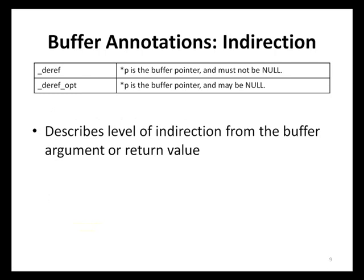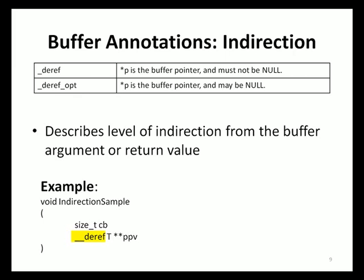The annotations found in the indirection category are used to describe the level of indirection of an argument or return value. If no annotation is specified, it is assumed that the argument p is the buffer pointer. When the annotation _deref is specified, this means that the pointer argument p is a pointer to a buffer and that it must not be null. The _deref_opt annotation indicates that the pointer argument p is a pointer to a buffer and that the pointer may be null. In sample code illustrating _deref, a function called indirection_sample is declared with two arguments: cb (a size_t type) and ppv, a pointer whose dereference will be a buffer of type T. The _deref annotation on ppv means that ppv must not be null.